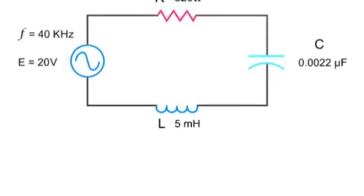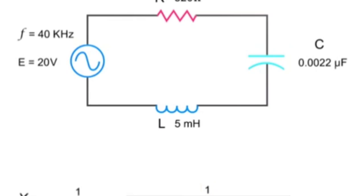To calculate the capacitive reactance in this series circuit, divide 1 by the product of 2π, the frequency, and the capacitance. So, substituting in the numbers, we have 1 divided by 6.28 times 40 kilohertz times 0.0022 microfarads, which equals 1,809 ohms.